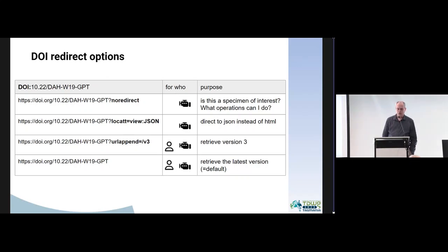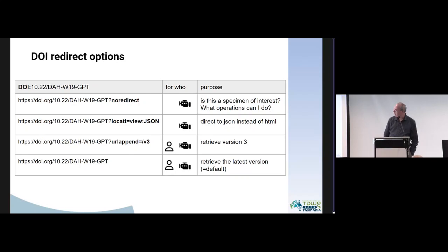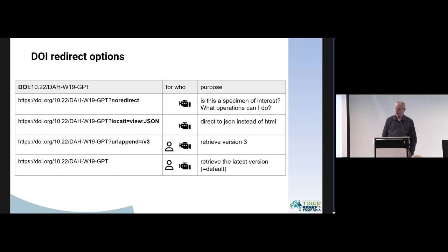The handle system has some extra advantages we want to use. One is that we want to store metadata in the PIT record. Usually a DOI PIT record only contains the URL it redirects to, but we want additional metadata that machines can use to figure out whether that's an object of interest without downloading the full specimen record. This is done using the no-redirect option, which works for all DOIs or handles. We also have an option for multiple redirects — the DOI can redirect to both a human-readable HTML page and a JSON version.